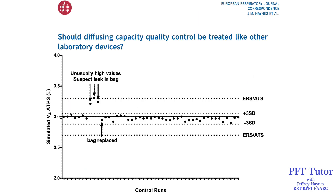We had this case report published in the European Respiratory Journal supporting the idea that a 3 standard deviation range may be better than the arbitrary ERS ATS limits. There were 3 measurements that were much higher than usual — around 6 standard deviations outside of the usual values — but they were still within the ERS ATS limits. A leak was suspected in the DLCO collection bag, and when the bag was replaced, the simulated alveolar volume came back within the 3 standard deviation range. This is an important point: if you only went by the ERS ATS ranges alone, you would possibly conclude that everything is fine and continue using this device for patient testing. Clearly it's not fine — that's why I advocate using a 3 standard deviation range.